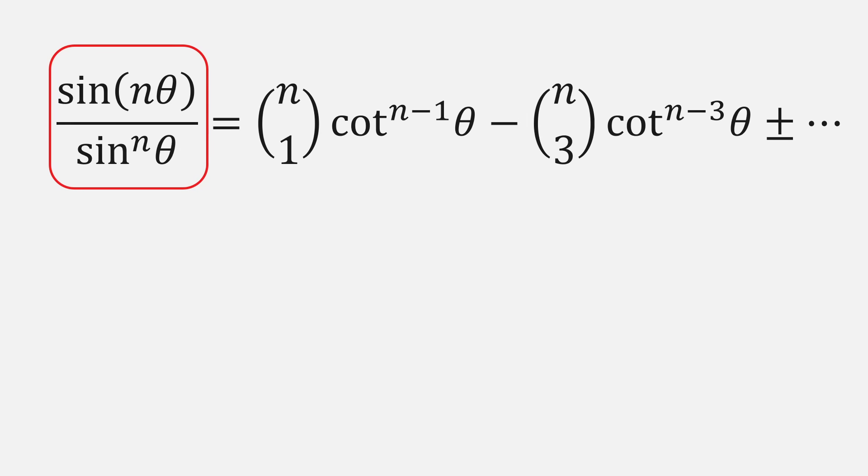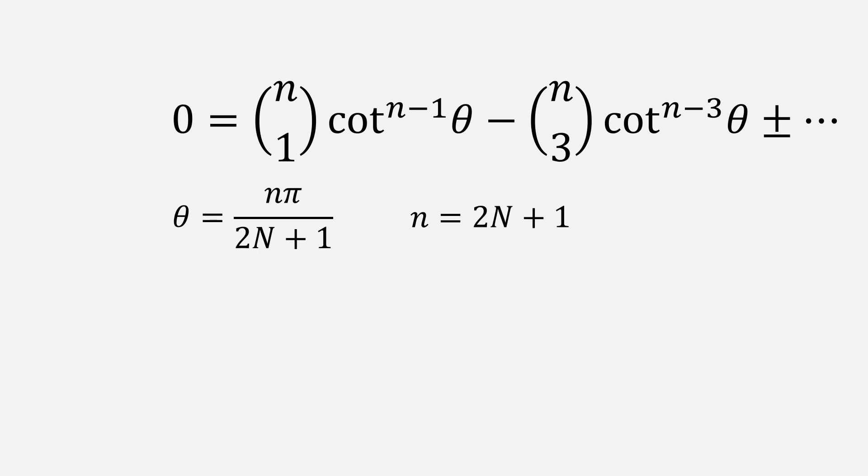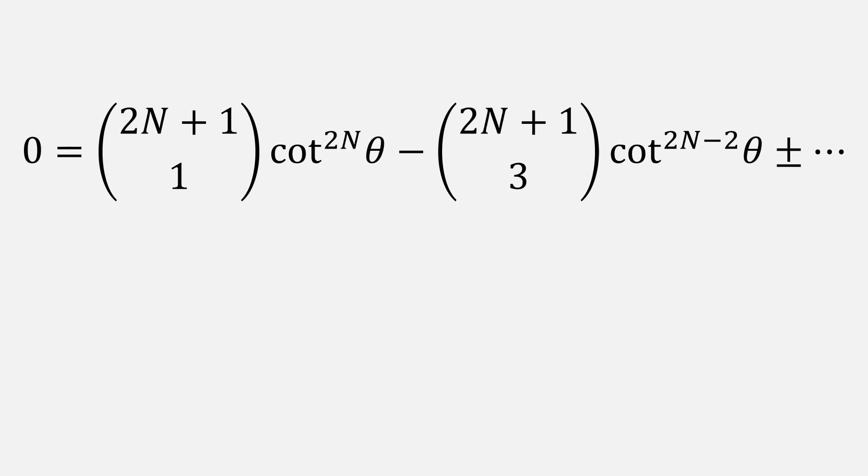Sweet! So let's go ahead and set that left-hand side equal to 0. But we need to carry through our substitutions for theta and n on the right-hand side of the expression as well. Which leaves us with this. Now, one more substitution. Let's let t equal cotangent squared theta. Plugging it in leaves us with the following polynomial.